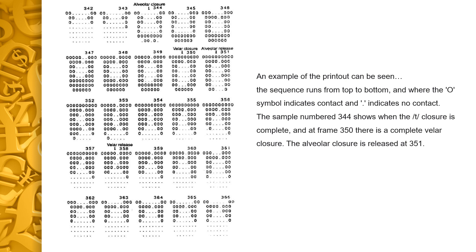When electropalatography is used for speech research, the data from tongue-palate contact is sampled by the controlling computer at up to 100 frames per second. In the early days, when digital displays were less ubiquitous and more limited, the data was printed out on paper for analysis. Here is an example of a printout.